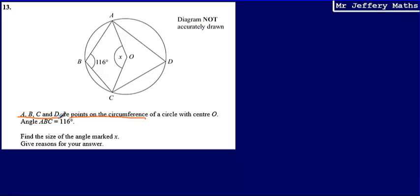So using this thing that we spotted first, A, B, C and D are points on the circumference. So this is a cyclic quadrilateral. What that means is I can then say I can work out what this angle ADC is equal to.